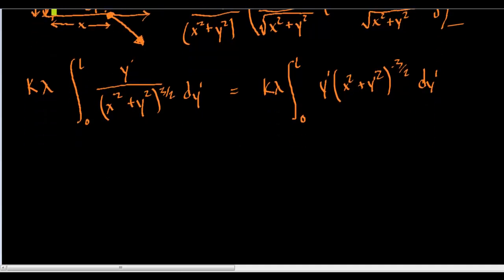Okay, and let's do a little guess and check here. I'm going to guess that the anti-derivative of this is x squared plus y squared to the negative 1 half. And let's see what happens if I take the derivative of that. I'm going to get negative 1 half times x squared.